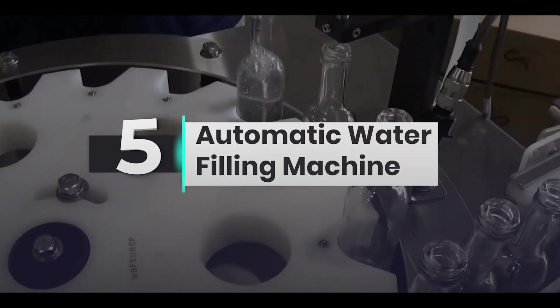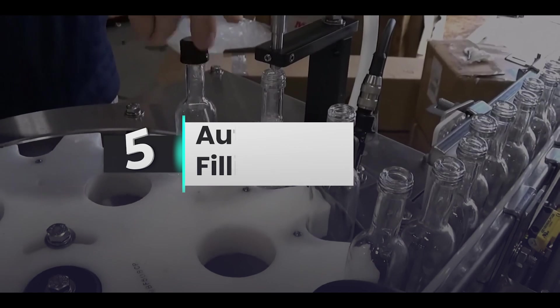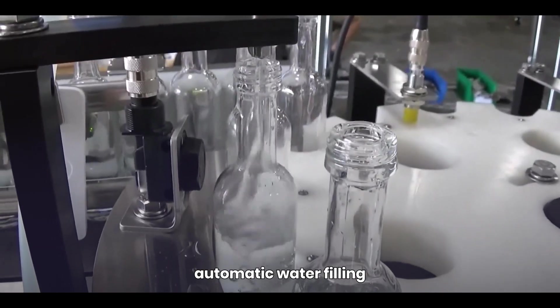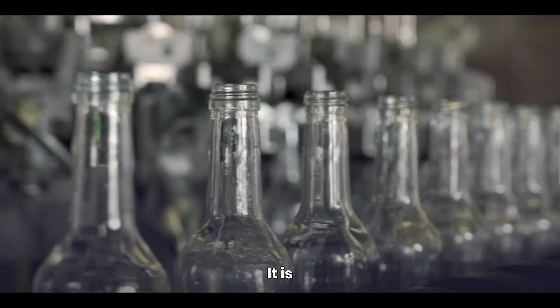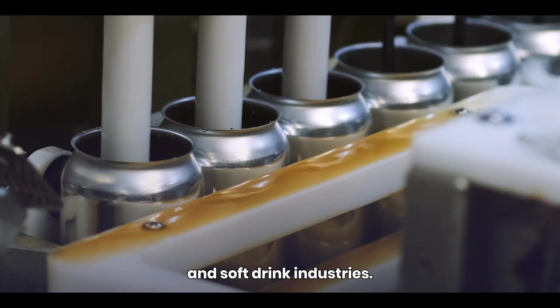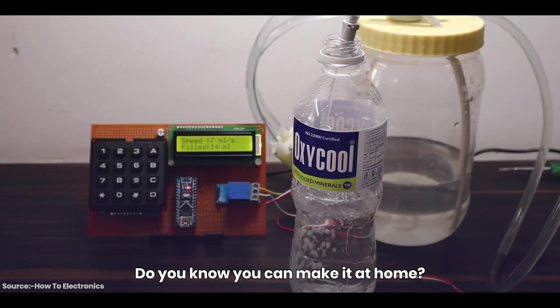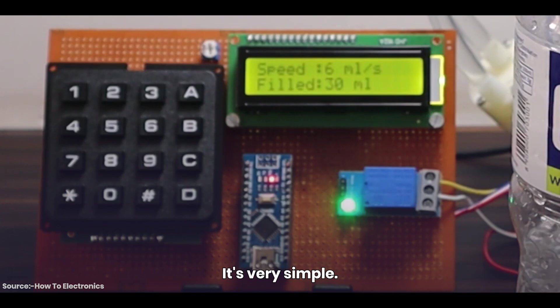Project number 5 is an automatic water filling machine. Do you know where automatic water filling machines are mostly used? It is widely used in the beverage and soft drink industries. Do you know you can make it at home? It's very simple.